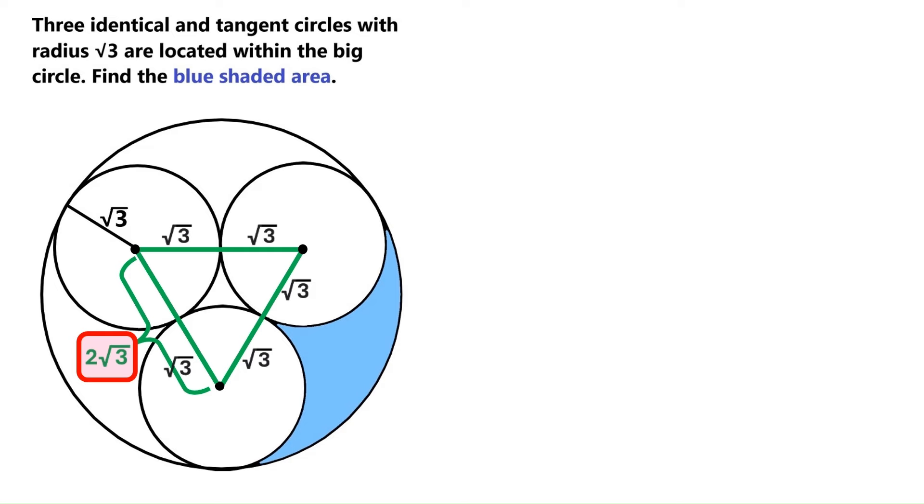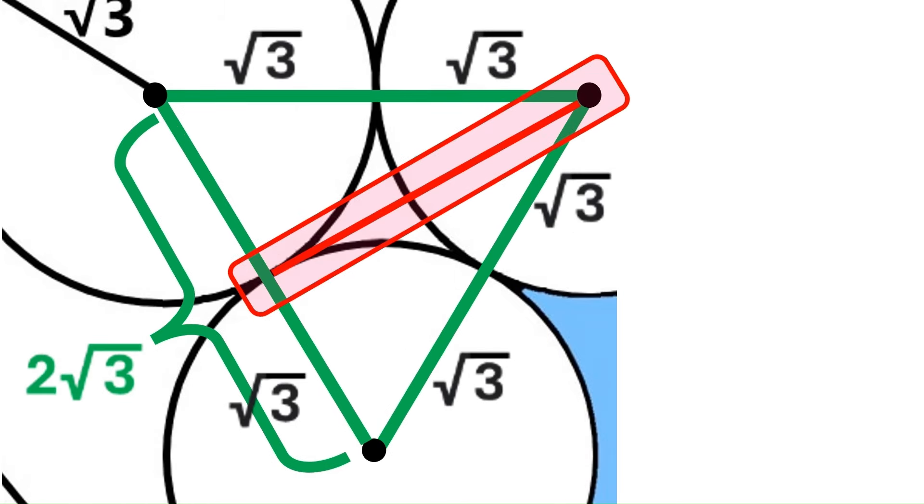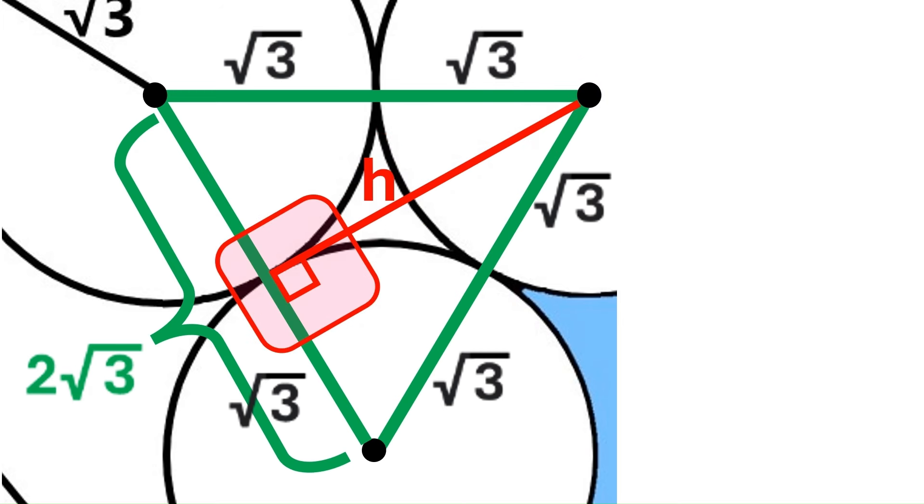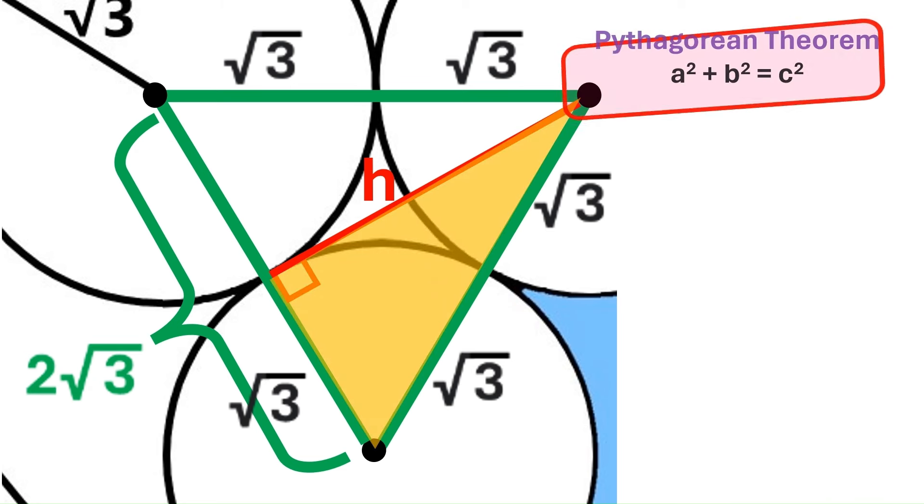I'll zoom in to work on the green triangle. Let's draw the height of the triangle here. Let's name it H. The height always forms a right angle with the base, so we have this right triangle here. That means we can apply the Pythagorean theorem, which states that the sum of the squares of the shorter sides of a right triangle is equal to the square of its longer side.